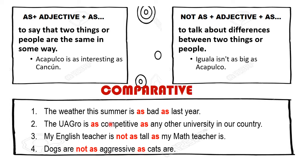Quiero que notes lo siguiente. Este es un comparativo, pero a diferencia del anterior que vimos con -er, este no cambia. Va a quedar en medio de las dos partículas as...as, en la misma forma. Bad, competitive, aggressive — no importa si el adjetivo es corto o el adjetivo es largo. Siempre quedará de esta manera.